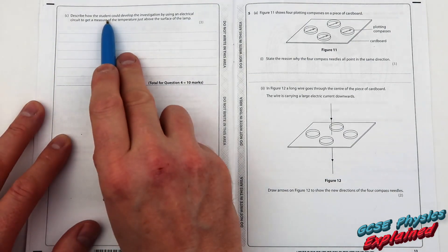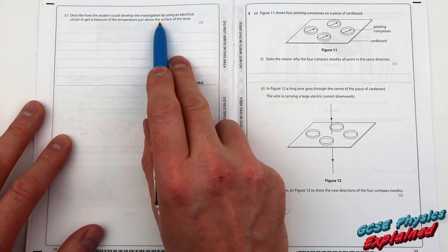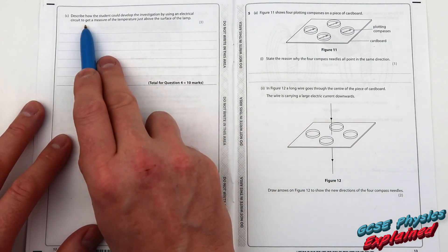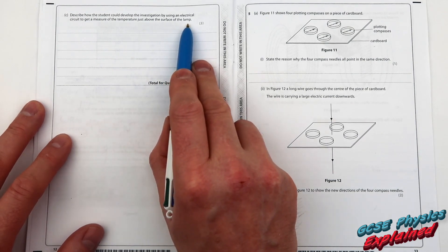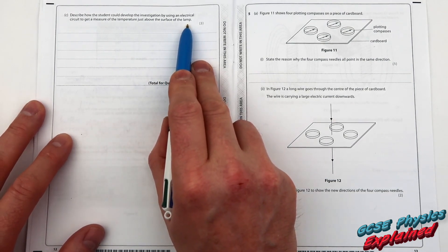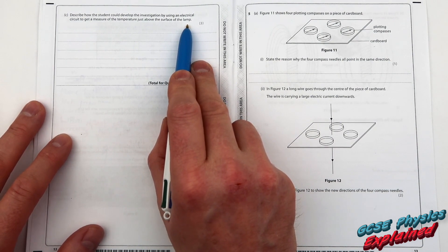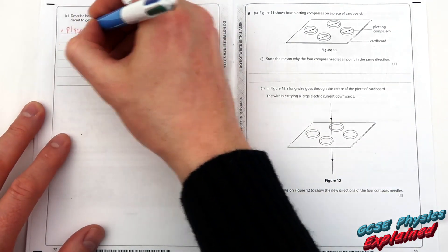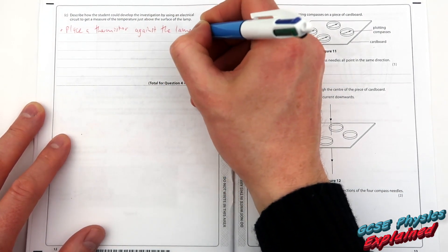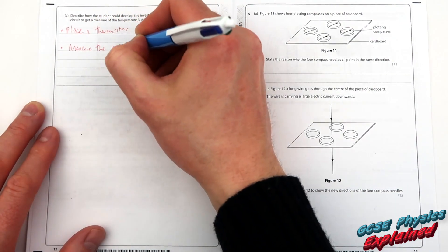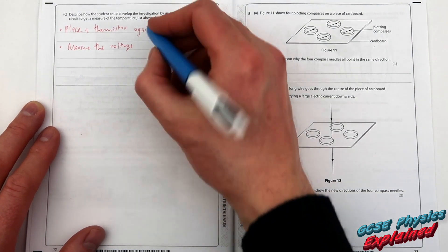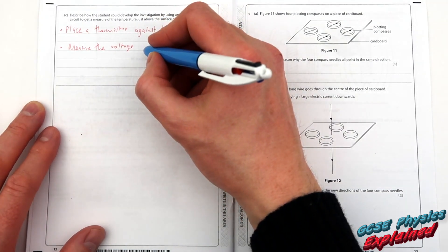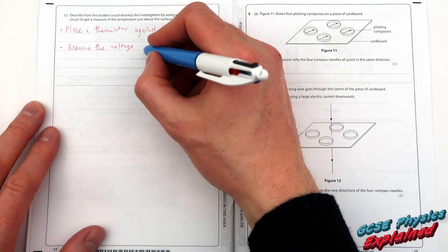4C Describe how the student could develop the investigation by using an electrical circuit to get a measure of the temperature just above the surface of the lamp. Well, how about placing a thermistor against the lamp because thermistors measure temperature? Why don't we measure the voltage of the thermistor and measure the current of the thermistor and then calculate the resistance of the thermistor?